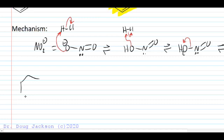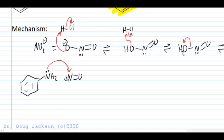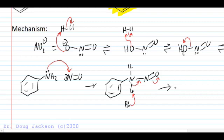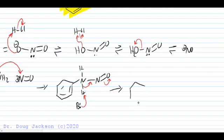Just like other Lewis acids when they react with anilines — like with the Friedel-Crafts reaction with aluminum chloride — we're going to see the lone pair on nitrogen react with this NO+ ion. So we've connected here. At this point, we can show some base from solution grabbing this proton and deprotonating, sending our electron pair to the more stable position on oxygen.